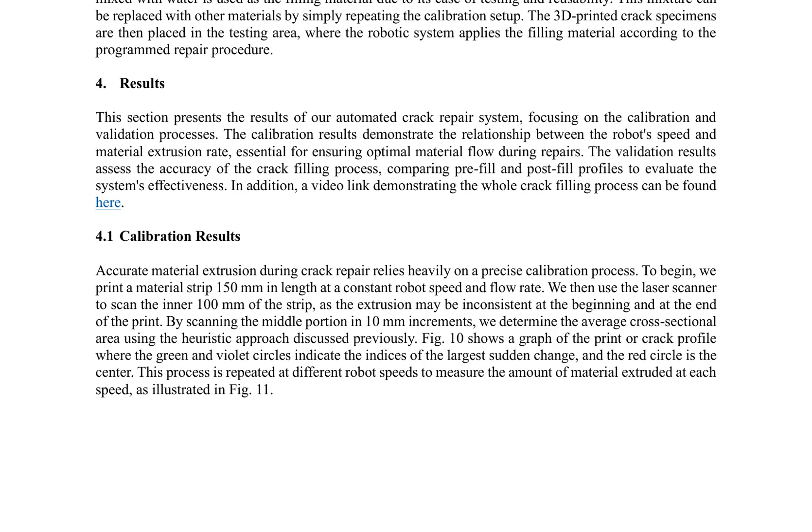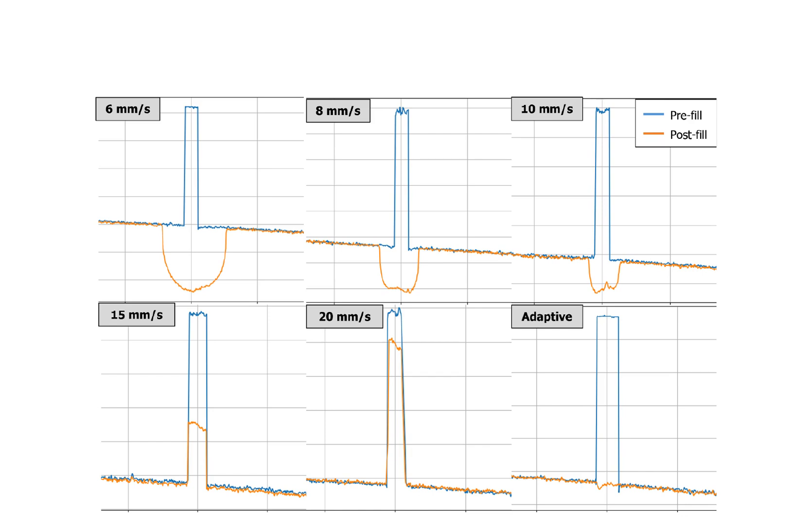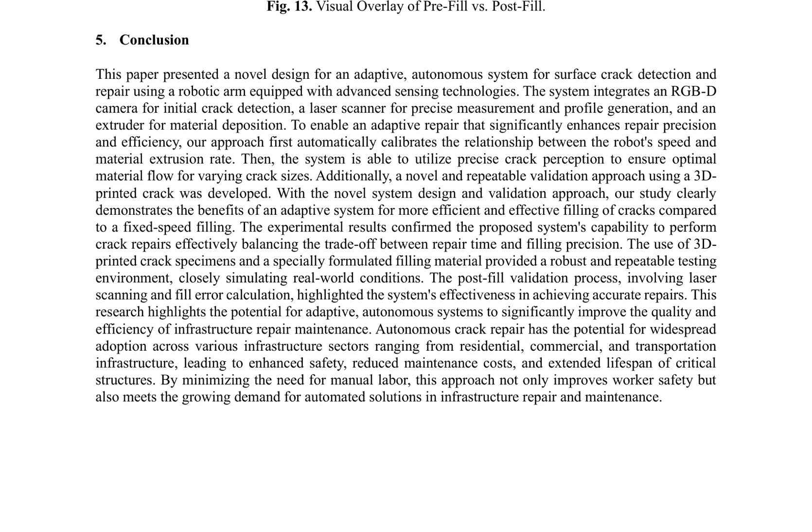The post-fill validation process highlighted the system's effectiveness in achieving accurate repairs, with adaptive speed control achieving the lowest error or highest accuracy. Qualitative performance of different robot speeds during crack filling showed that adaptive speed control resulted in the least amount of overfill and underfill. The repair process time varied with speed, with adaptive speed control providing a balanced approach that optimized both speed and precision.